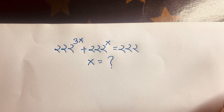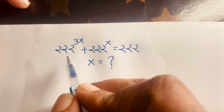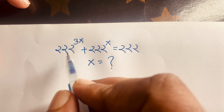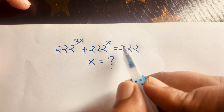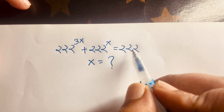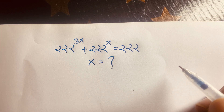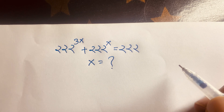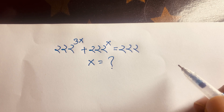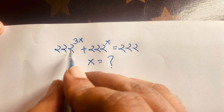In this video we solve this interesting math question. The equation is 222 to the power 3x plus 222 to the power x equals 222. We need to find the value of x in this exponential equation. Let's start.